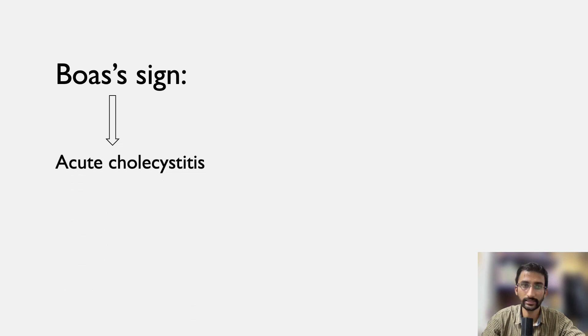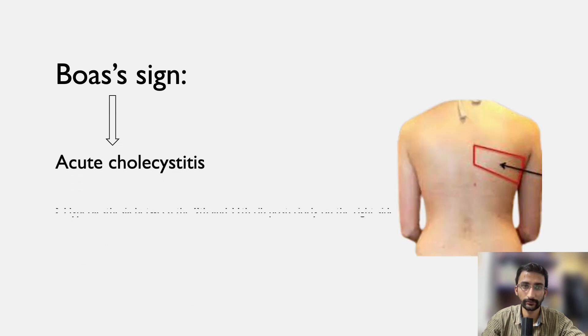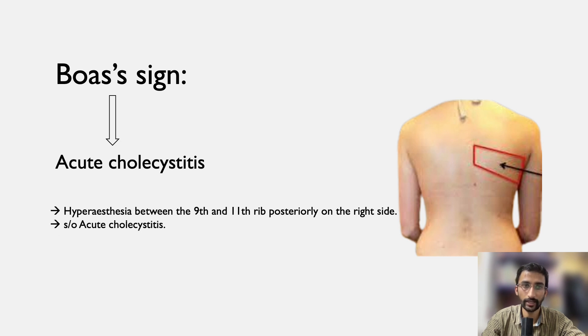Boas sign is done to confirm acute cholecystitis. There is hyperesthesia between the 9th and 11th rib posteriorly on the right side, which is suggestive of acute cholecystitis.